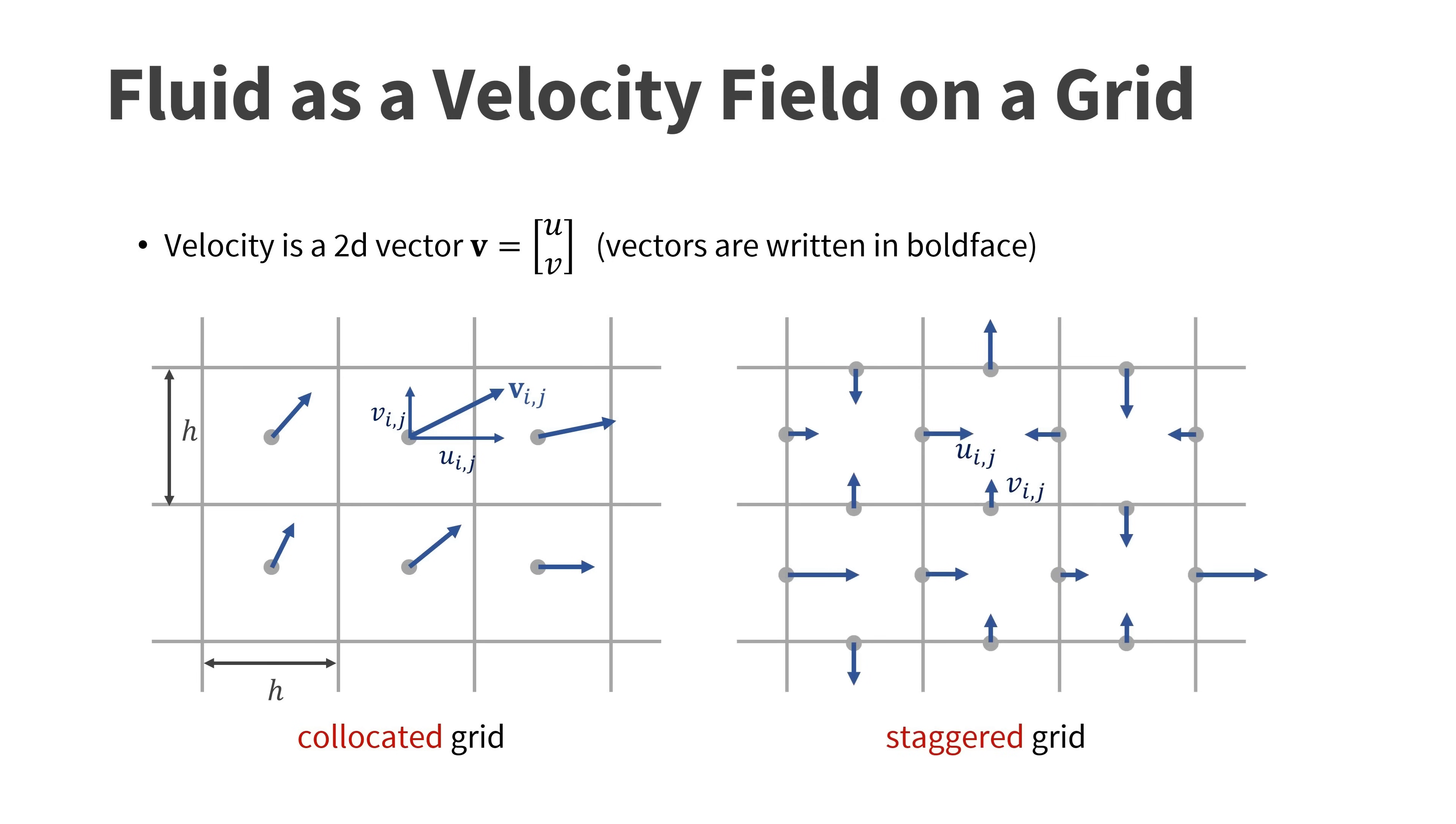For fluid simulations, there is actually a better grid, the staggered grid. Here we store the velocity components in different locations. The horizontal components are stored at the center of the vertical cell faces. The vertical components are stored at the center of the horizontal cell faces. The nice thing about this arrangement is that we can now see how much fluid flows from one cell to its neighbor.